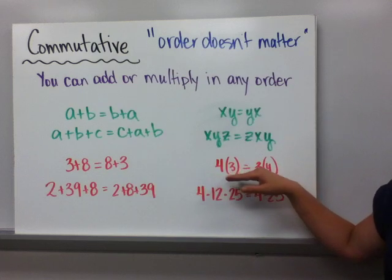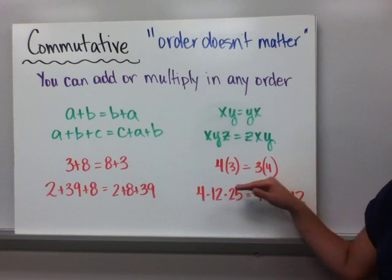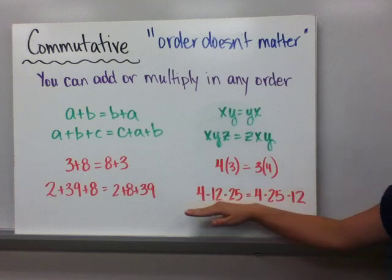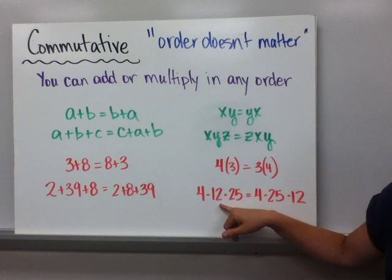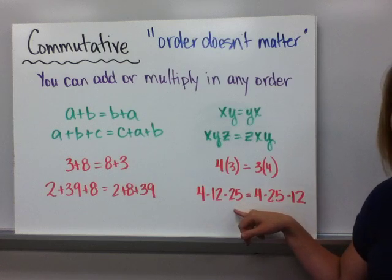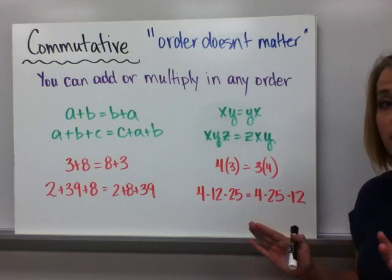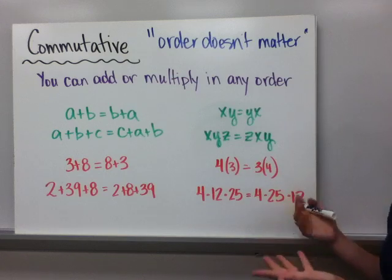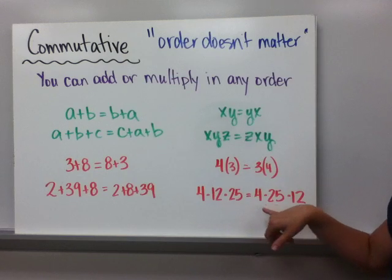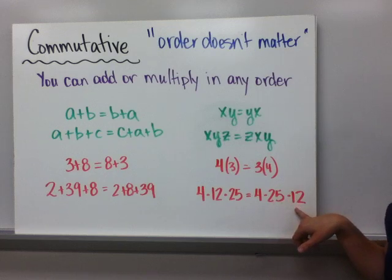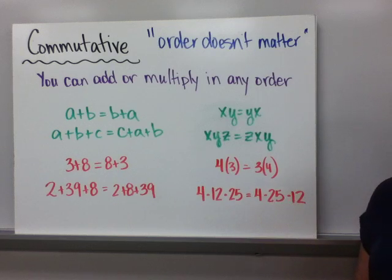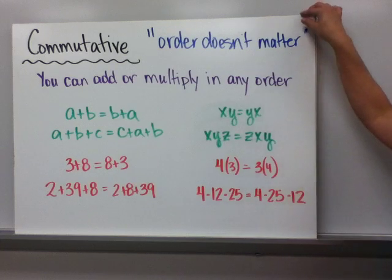In multiplying, 4 times 3 is the same thing as 3 times 4. Both times you would get 12. And again, I can put some numbers together. 4 times 12 is 48. And then when I go to multiply 48 times 25, I don't know about you, but I can't really do that in my head. So I'm able to use the commutative property for that. 4 times 25 is 100. 100 times 12 is 1,200. That's a lot easier.